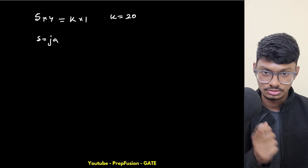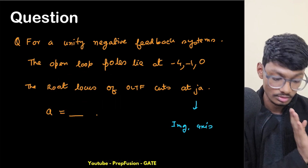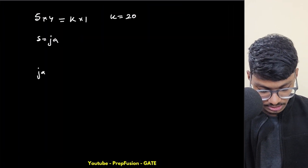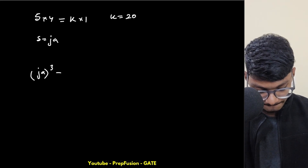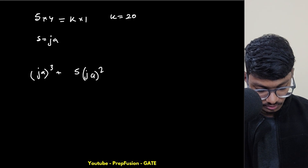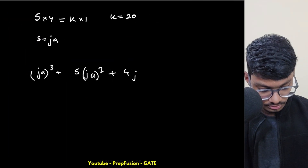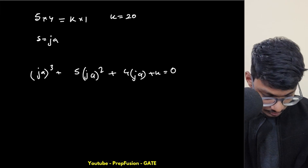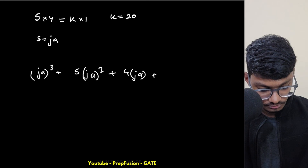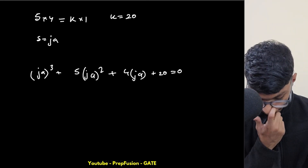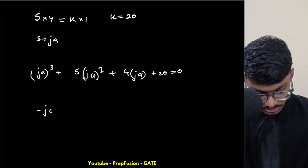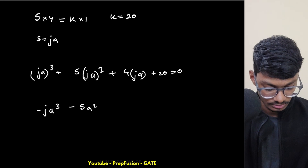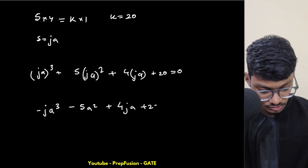Now, since the root locus crosses at j·a, we put s = j·a into the characteristic equation. So: (ja)³ + 5(ja)² + 4(ja) + k = 0. Expanding: j³ = -j, so this becomes -ja³ - 5a² + 4ja + 20 = 0.